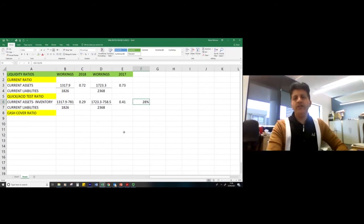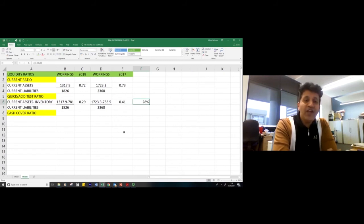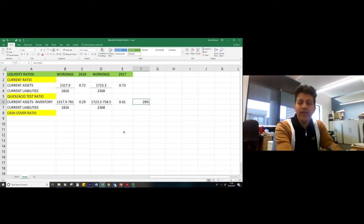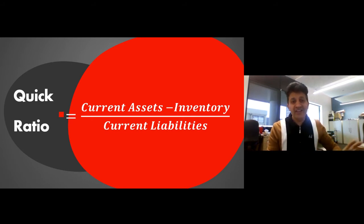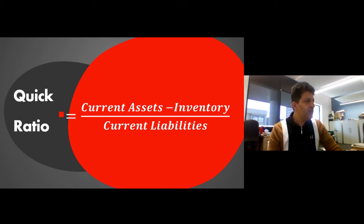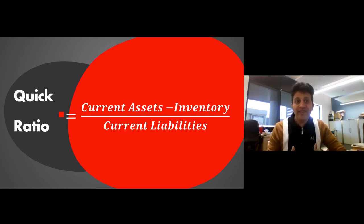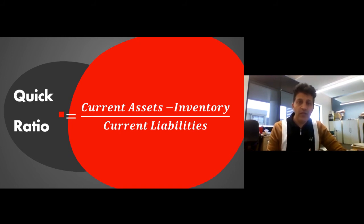Both results are far below the ideal ratio of 1:1. However, they have only 29p for every £1 of liability in 2018 and 41p in 2017. For retailers, these ratios are not out of place — they are quite expected results. If your business is in the manufacturing sector, the quick ratio should be much higher. When interpreting results, always link them to the context and sector. Simply saying the ratio is too low without acknowledging it's a retailer that doesn't need to keep much cash will not earn marks in analysis.